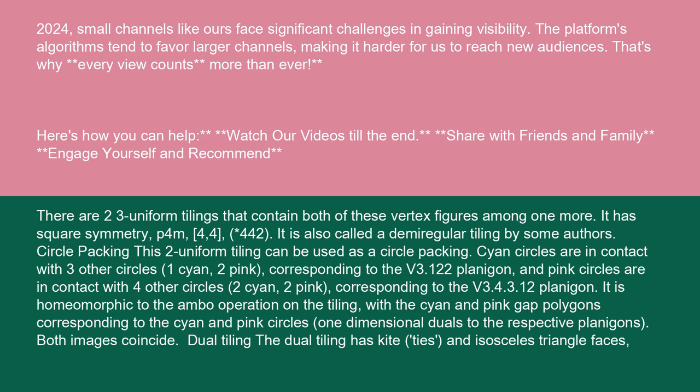This two-uniform tiling can be used as a circle packing. Cyan circles are in contact with three other circles — one cyan, two pink — corresponding to the V3.12.12 planigon, and pink circles are in contact with four other circles — two cyan, two pink — corresponding to the V3.4.3.12 planigon. It is homeomorphic to the rhombo operation on the tiling, with the cyan and pink gap polygons corresponding to the cyan and pink circles.